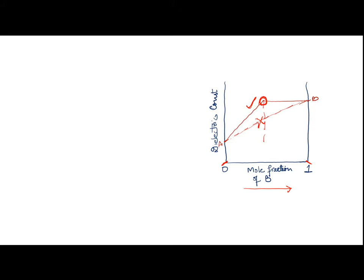By simply back-projecting the inflection point to the x-axis, you can find out in which ratio A and B are complexing. For example, if this ratio comes out to be 0.5, that means A and B are combining in a 1:1 ratio. So by looking at the curve you can determine whether a complex is forming and in what ratio.